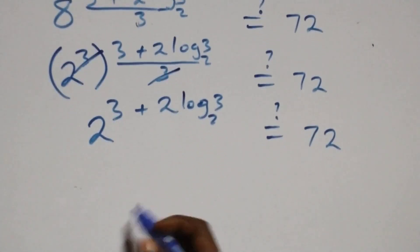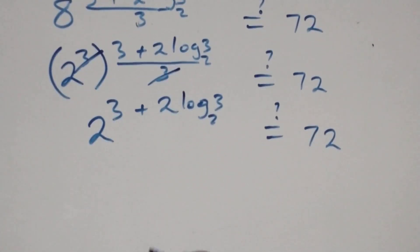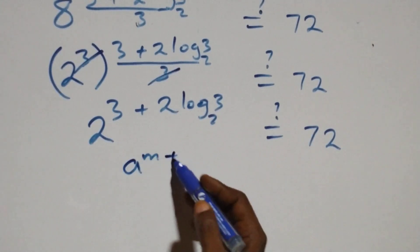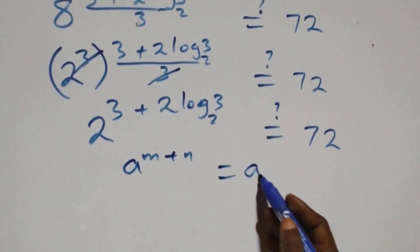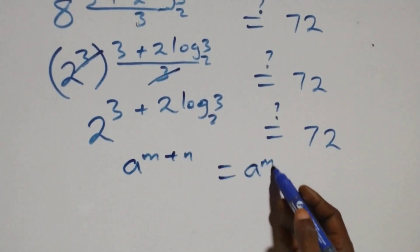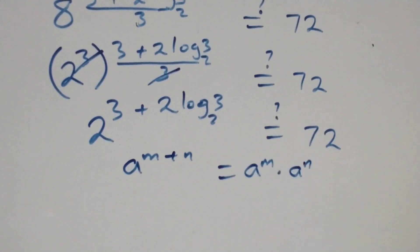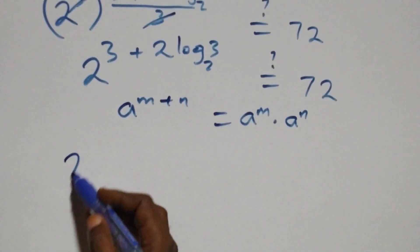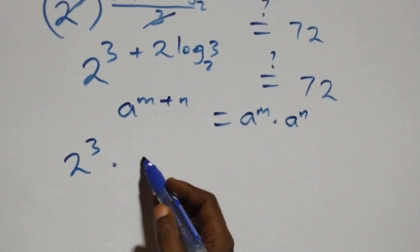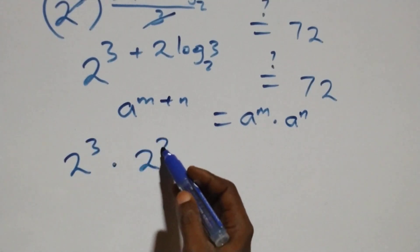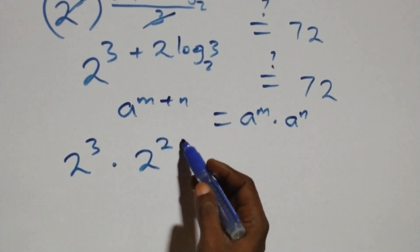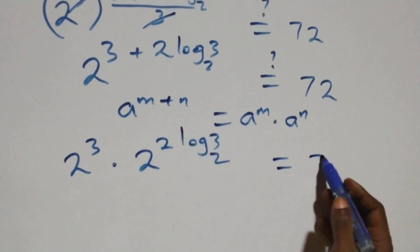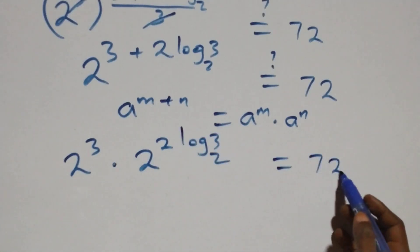We apply the law of indices: when we have a raised to power (n plus m), this is the same as a raised to power n times a raised to power m. So this becomes 2 raised to power 3 times 2 raised to power (2 log₂3) equals 72.